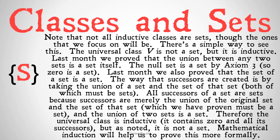Therefore, the two constitutive pieces of a successor relationship are going to be a set, assuming that the original number is a set. We've already shown that zero is a set — that's one of our axioms, by axiom three. Therefore, the universal class is inductive, because it contains zero (zero is a set) and all of zero's successors, because all we're doing is taking unions of things that we are already confident are sets. But as noted, the universal class is not a set. Therefore, what we've shown is that not all inductive classes are sets, and we've discovered our first inductive class, namely the universal class.